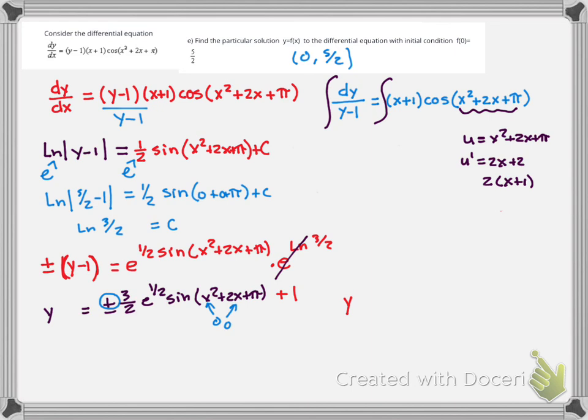My final answer is y equals 3 over 2 e to the 1 half sine of x squared plus 2x plus pi all plus 1.